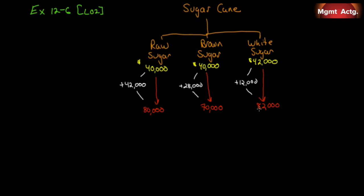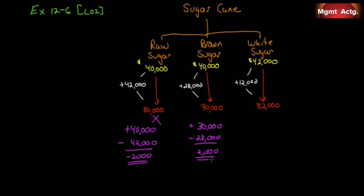Which products should be sold at split-off, and which should be processed further? We compare incremental revenue to incremental processing cost. Raw sugar: gain forty thousand dollars but spend forty-two thousand — two thousand dollars worse off, so no. Brown sugar: gain thirty thousand dollars of additional value but spend twenty-eight thousand — two thousand dollars better off, so yes. White sugar: gain forty thousand dollars of additional value but spend only twelve thousand — twenty-eight thousand dollars better off, yes.